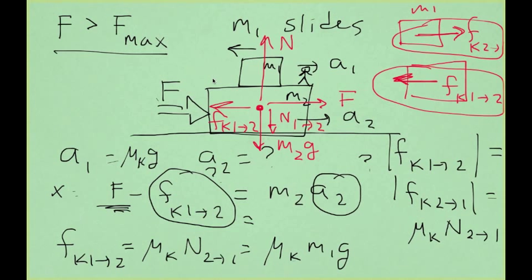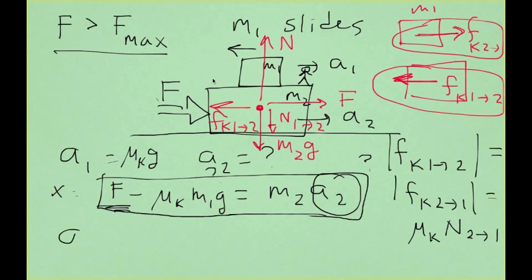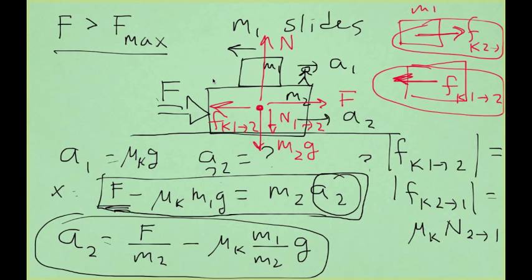So now we know that this force circled is μ sub k M1g. So we can replace that in this equation. Replace that with μ sub k M1g. So the acceleration is equal to f divided by M2 minus μ sub k M1 over M2 times g. And that's the final answer for the acceleration of block 2.